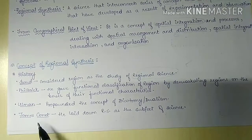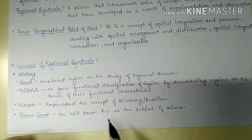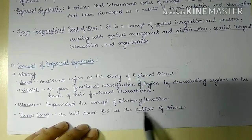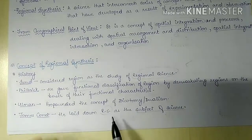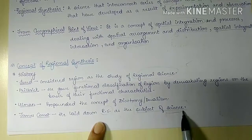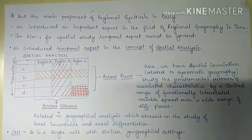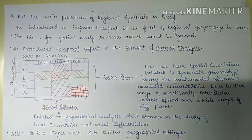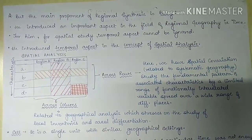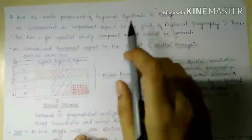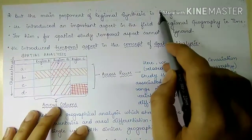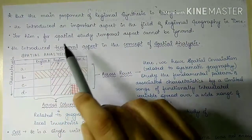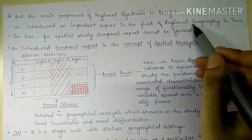Then we had James Connett, who laid down regional synthesis as a subject of science. But the most important contribution in the concept of regional synthesis came from Barry, who introduced an important aspect in the field of regional science — the temporal aspect, meaning the aspect of time.